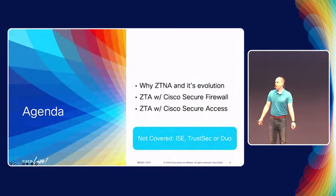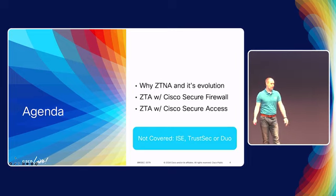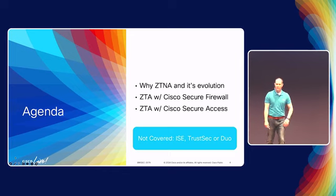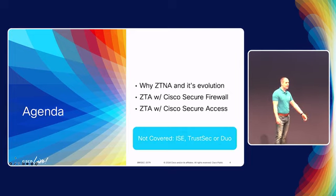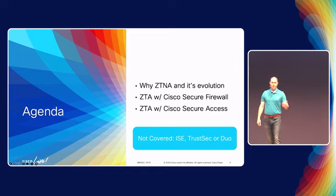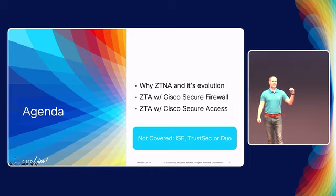What are we going to cover today? We're going to cover why ZTNA matters, some of its evolution, and then we're going to dive into two new technologies from Cisco in the last six months to a year: Zero Trust Access on Secure Firewall and Zero Trust Access within Cisco Secure Access. What we will not be covering today: ICE, Security Group Tags, TrustSec, or Duo. If you're here for any of those things, you probably want to find another session.